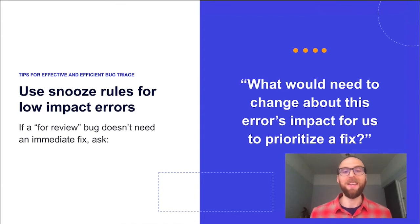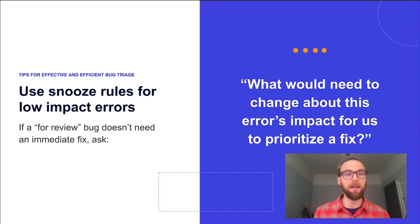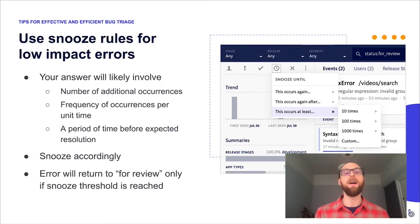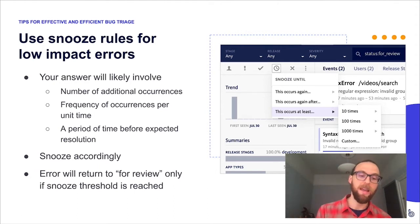Next, let's talk about snoozing errors in a bit more depth. When you triage an error and determine it's relatively low impact — not something you're going to fix immediately — the key question you should be asking is: what would need to change about this error's impact for us to prioritize a fix? Most likely, the answer involves a number of additional occurrences, an increase in frequency per unit time, or a set period of time after which you don't expect the bug to be an issue. In all these cases, you can use snooze rules to represent those criteria.